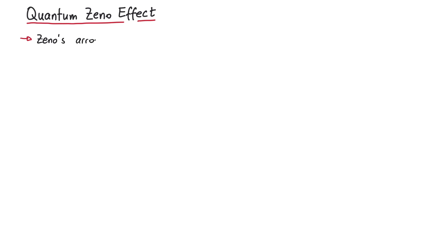The name comes from Zeno's arrow paradox, formulated by the Greek philosopher Zeno of Elea, who lived around 500 BC. He claimed that in order for something to move, it has to change its position. So far, so good.